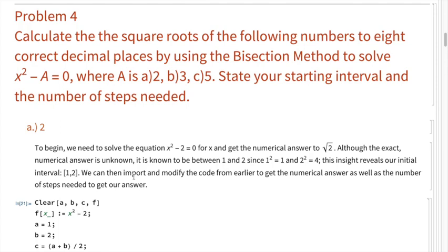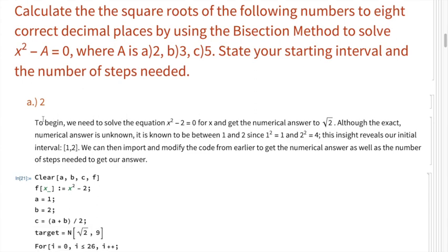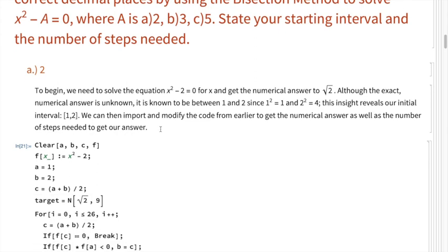Problem 4: calculate the square roots of the following numbers to 8 correct decimal places using the bisection method to solve the equation x² - a = 0, stating the starting interval and number of steps used. Problem a is the square root of 2. Although we don't know the exact value, we know it's somewhere between 1 and 2, since 1² = 1 and 2² = 4. So 1 and 2 will be our initial interval, and we copy the bisection method code from earlier.